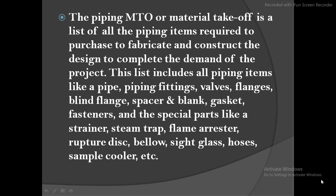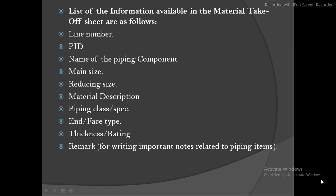We have to do the MTO, and as a general idea, 60 to 80 percent should match with the design MTO. When we make an Excel sheet for the P&ID, it comes with columns like: line number, P&ID number, name of the piping component (such as tee, reducer, gate valve), reducing size (main size and run size), material description (what grade and material), piping class, face type (raised face, lap joint face), thickness, and rating (150, 300), plus a remarks column for important notes.